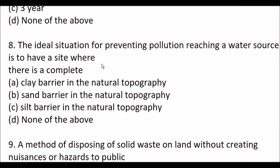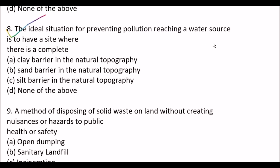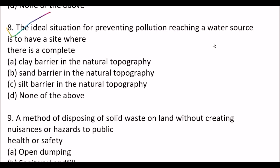Next question: the ideal situation for preventing pollution reaching a water source is to have a site where there is a complete — option A, clay barrier in the natural topography; option B, sand barrier; option C, silt barrier; option D, none of the above. Right answer is option A, clay barrier in the natural topography.